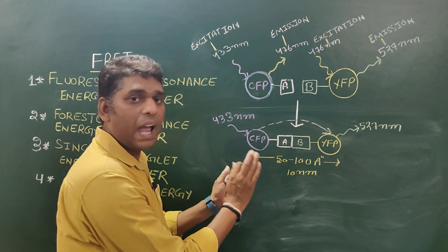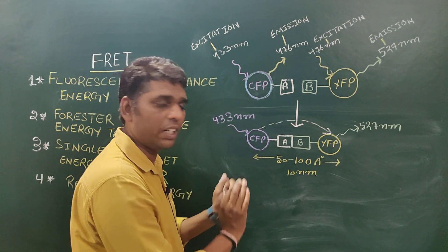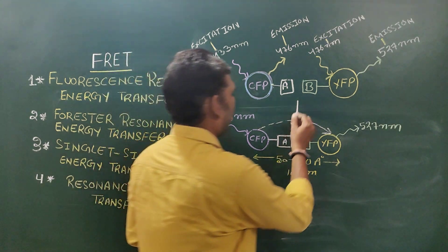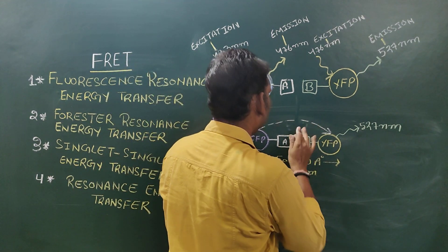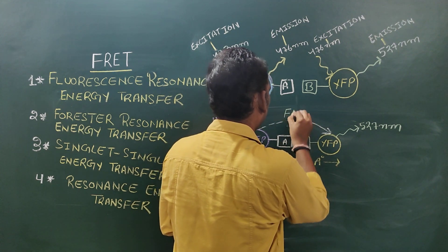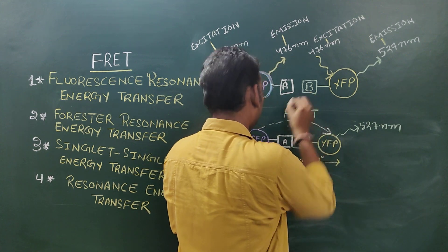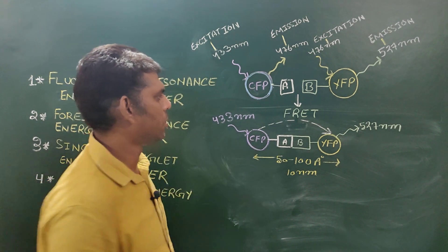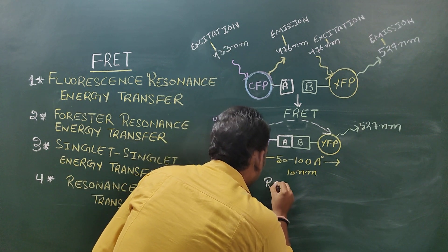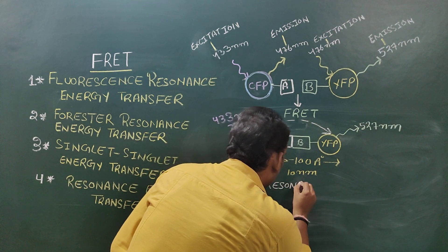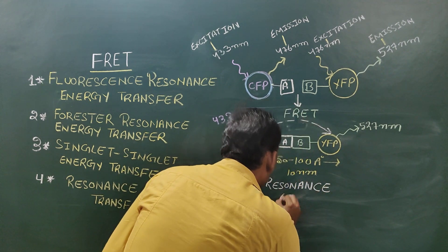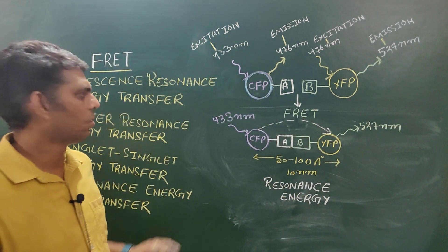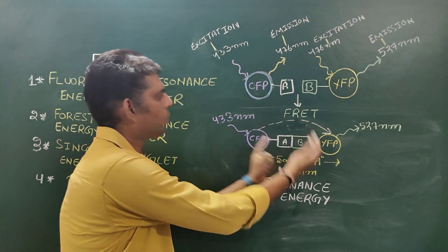The transfer of resonance energy — the actual amount of energy transferred from one fluorescent molecule to another fluorescent molecule — is termed FRET. The energy transferred from one fluorescent molecule to another fluorescent molecule is known as resonance energy.